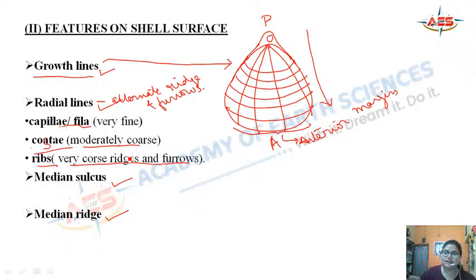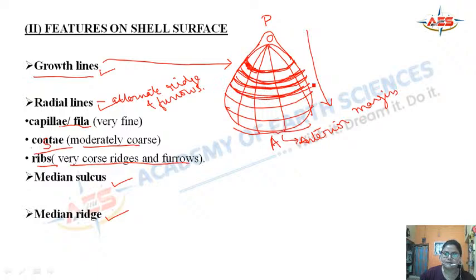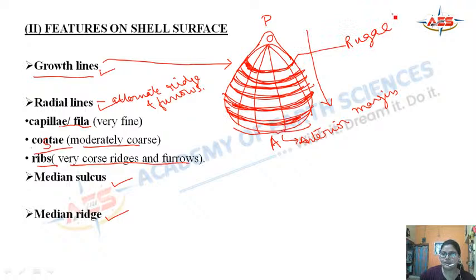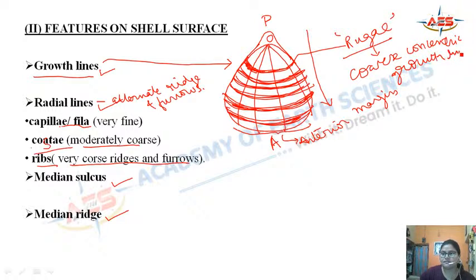When the concentric growth lines become very coarse in nature, they are known as rugae. These are coarse concentric growth lines.